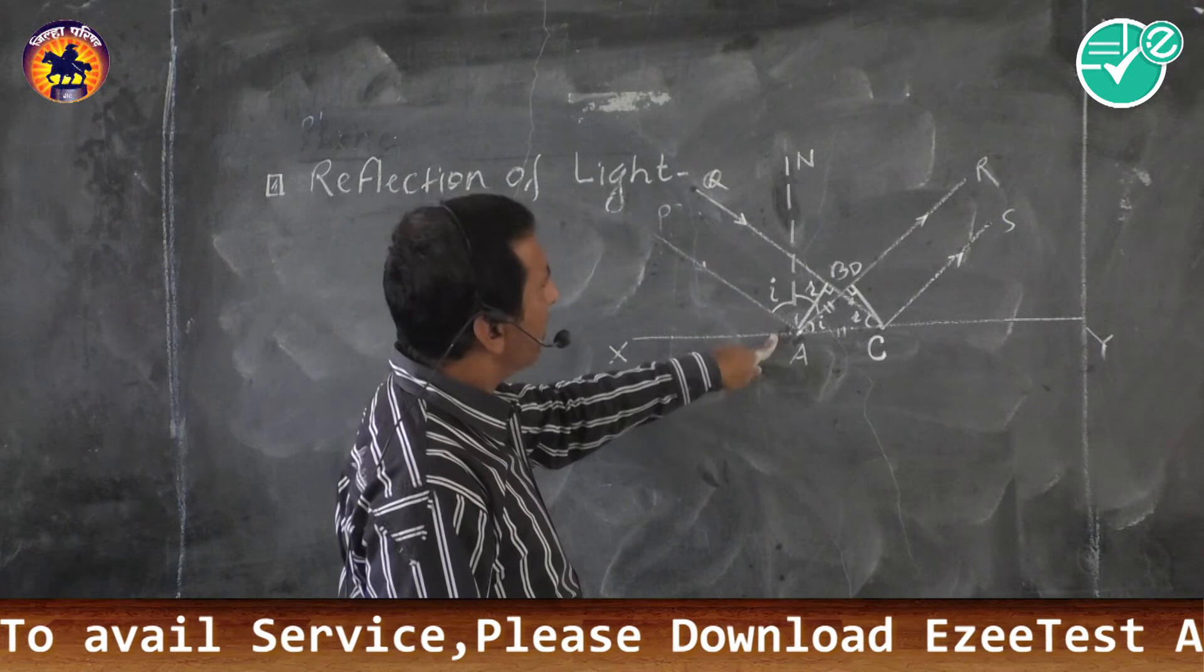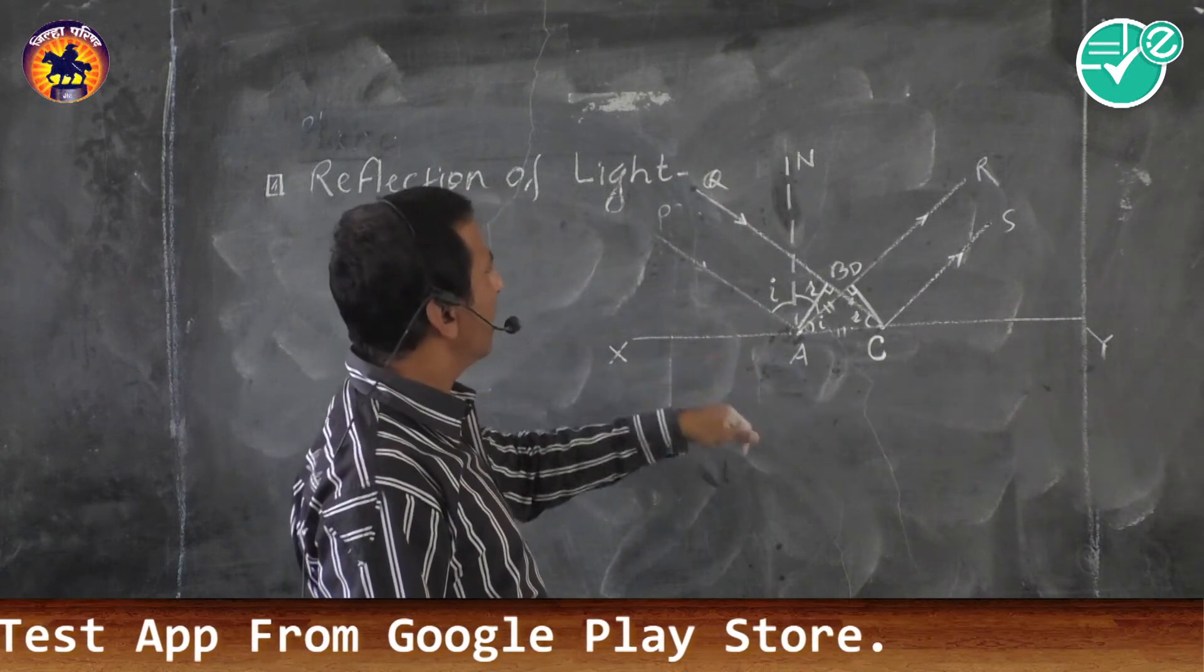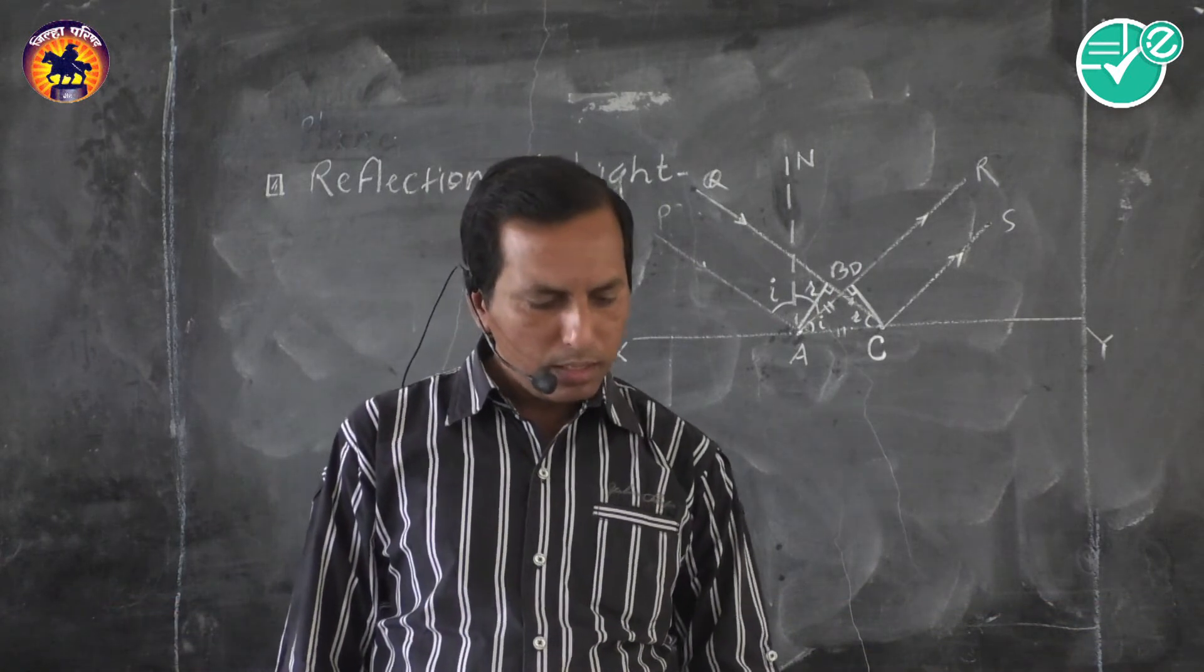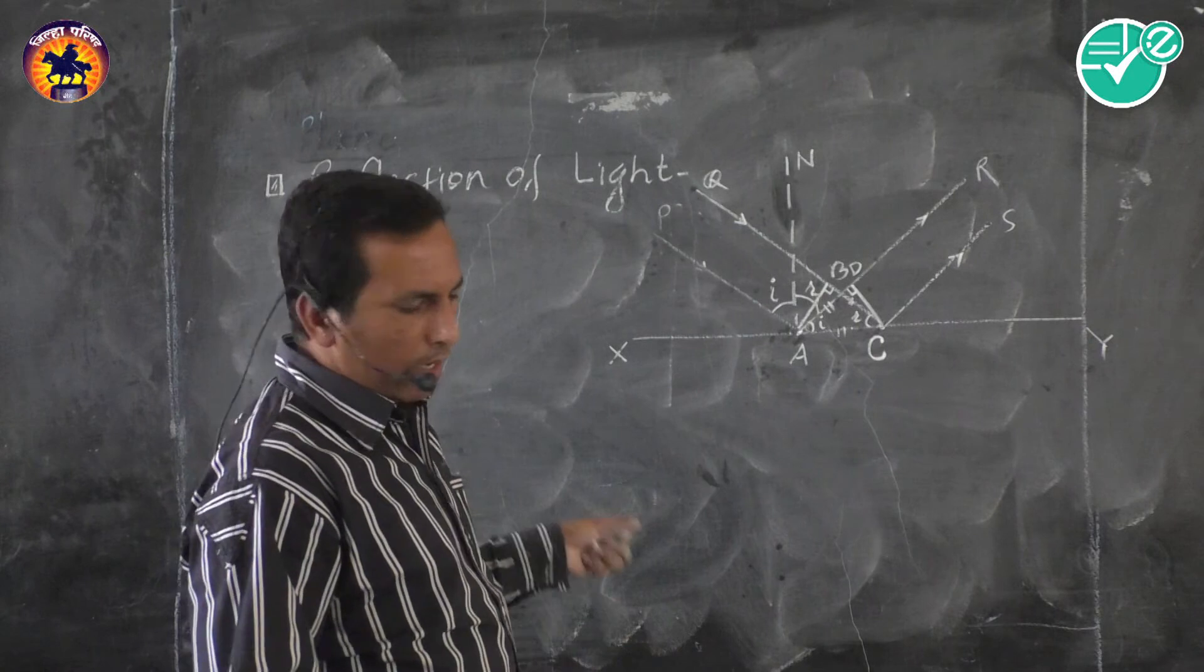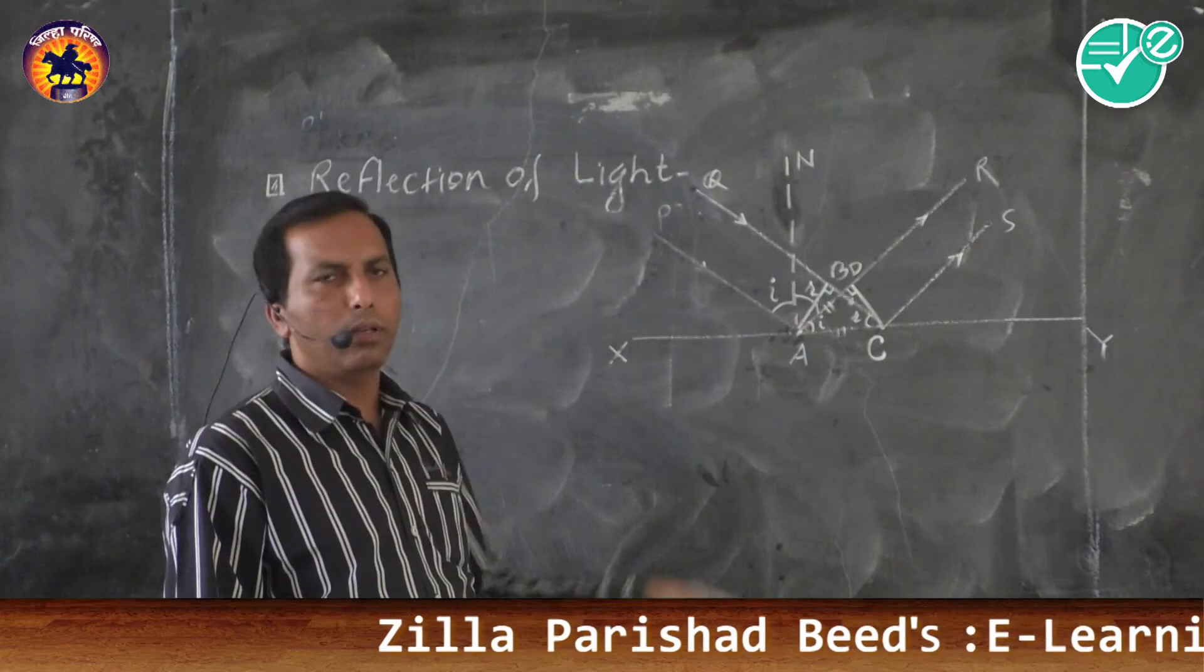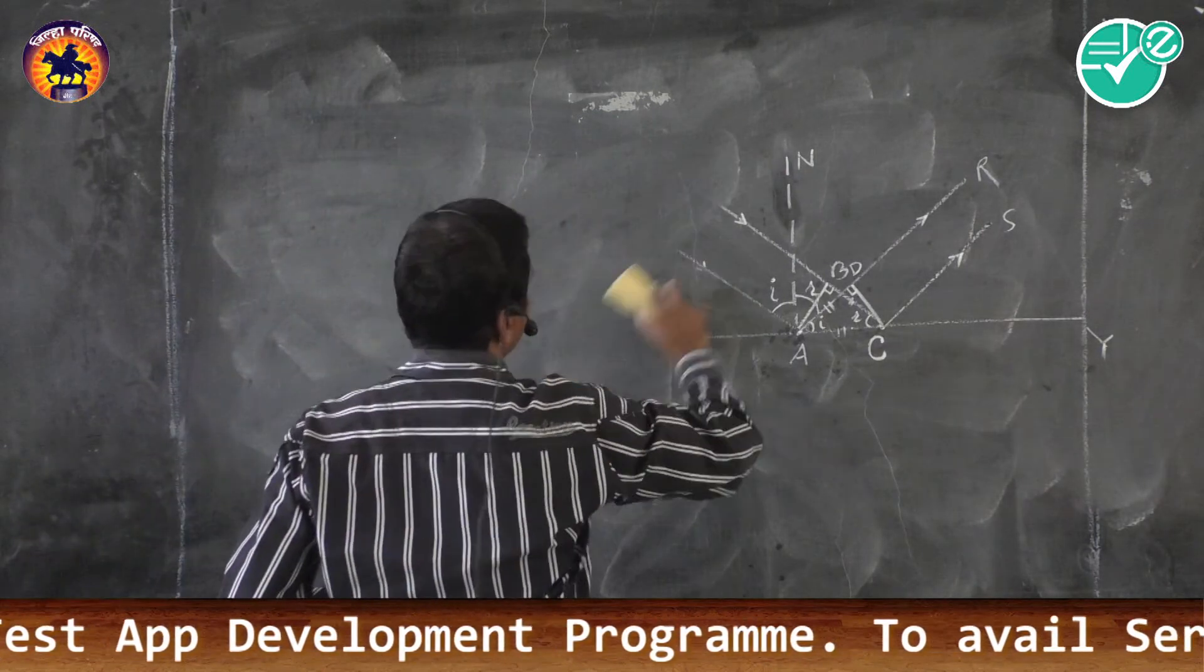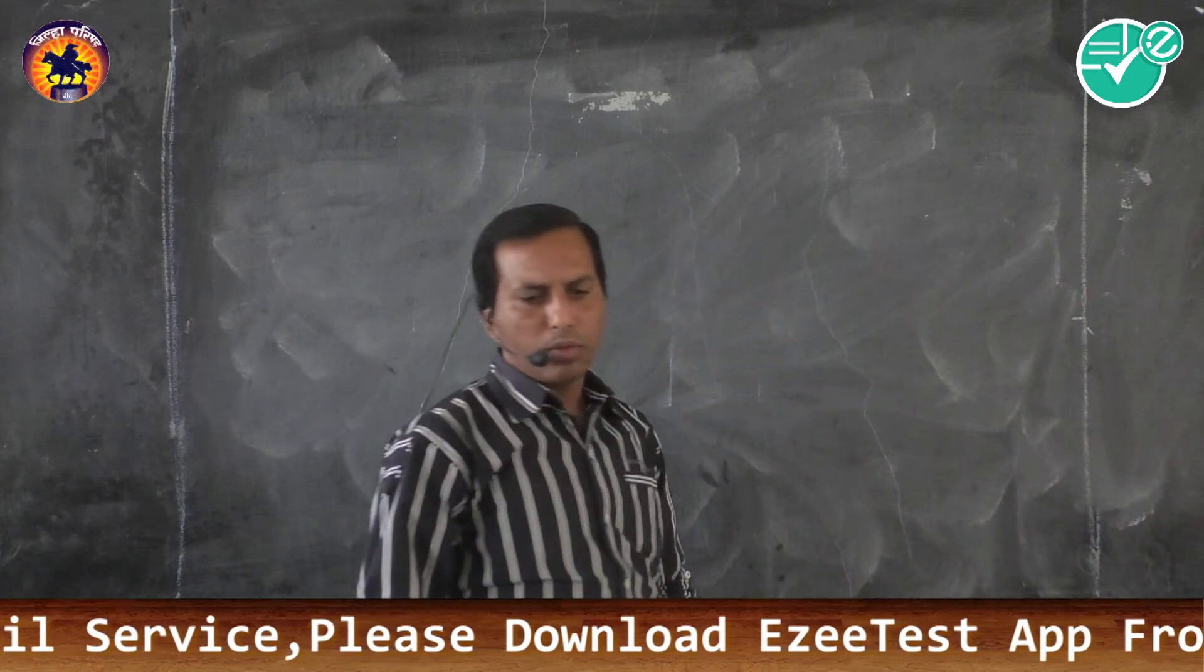One is incident ray and reflected ray lying on opposite side of normal. Similarly, incident ray, normal and reflected ray are in the same plane, lie in the same plane. Also, angle of incidence is equal to angle of reflection. These are the three laws related with reflection of light. Students, we have completed this with reflection of light. I hope you have got the knowledge about reflection of light.